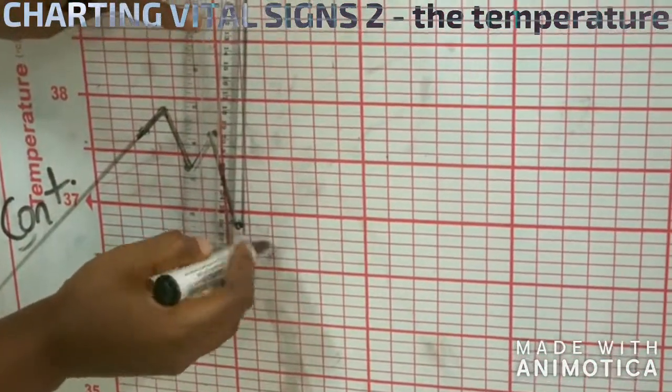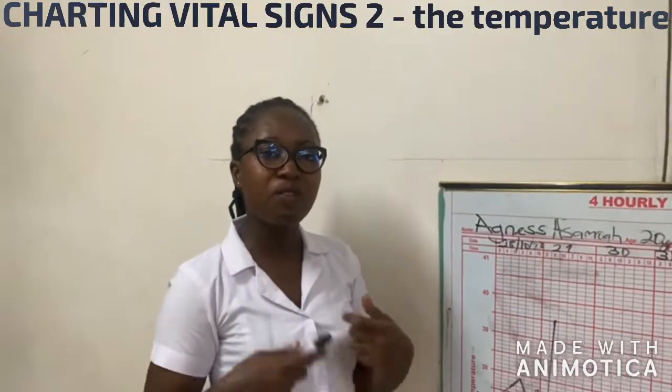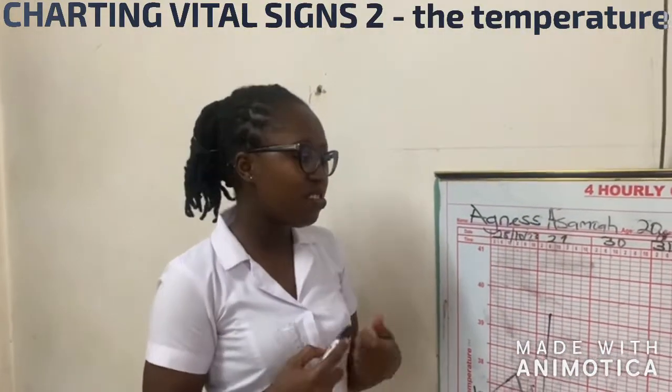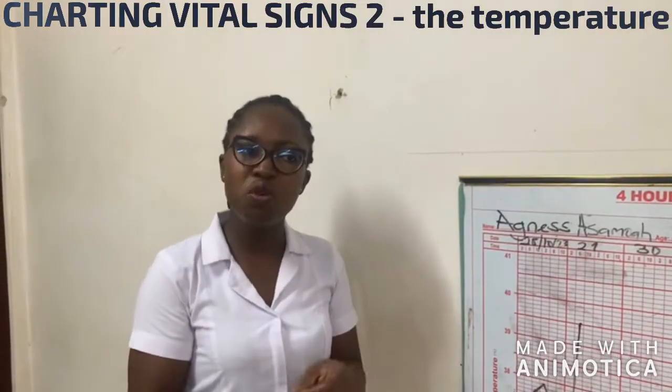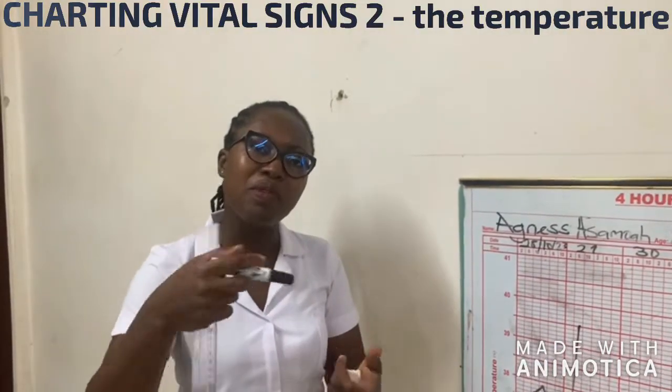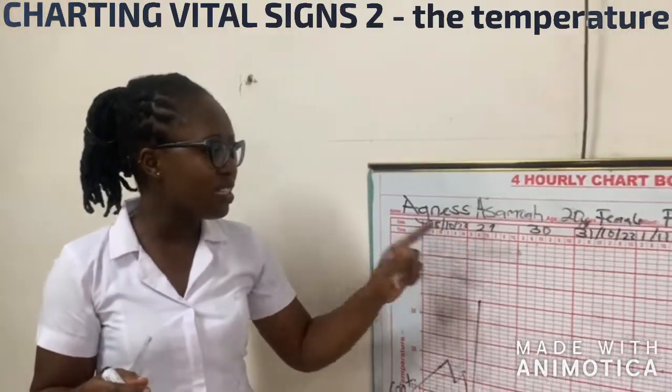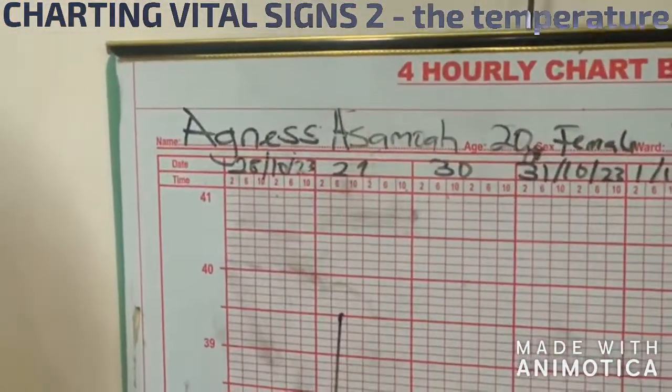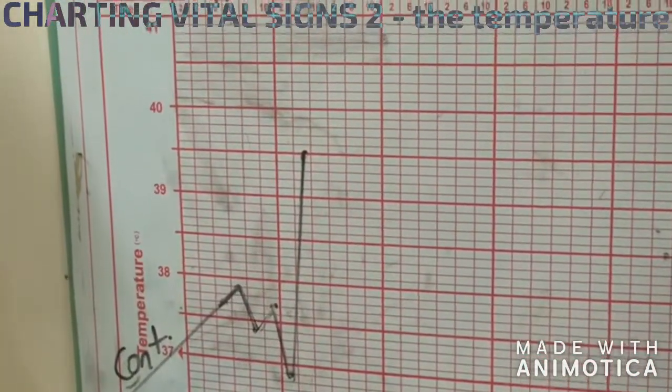Which signifies patient is pyrexial. So we need to do something as a nurse. When temperature is too high, you have to intervene. We are not just interested in knowing the state of the temperature. We want to know if it is high so that we can bring it down. That's the most important thing.